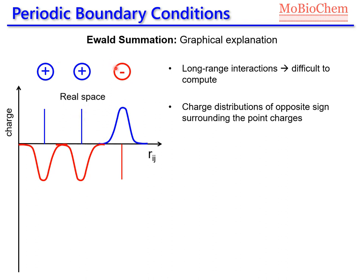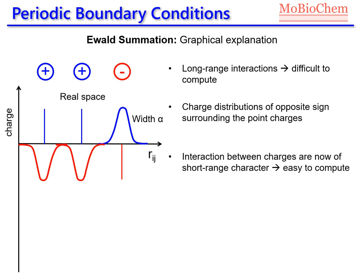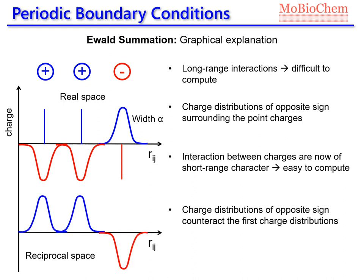Now we have these three ions with three charge distributions surrounding the ions, and these charge distributions somehow screen the interaction between the ions. Now we can compute the interaction between the ions including the charge distribution which surrounds the charge. This interaction is easy to compute because we will have interactions of short-range character, since we are shielding the point charge of each of these atoms.